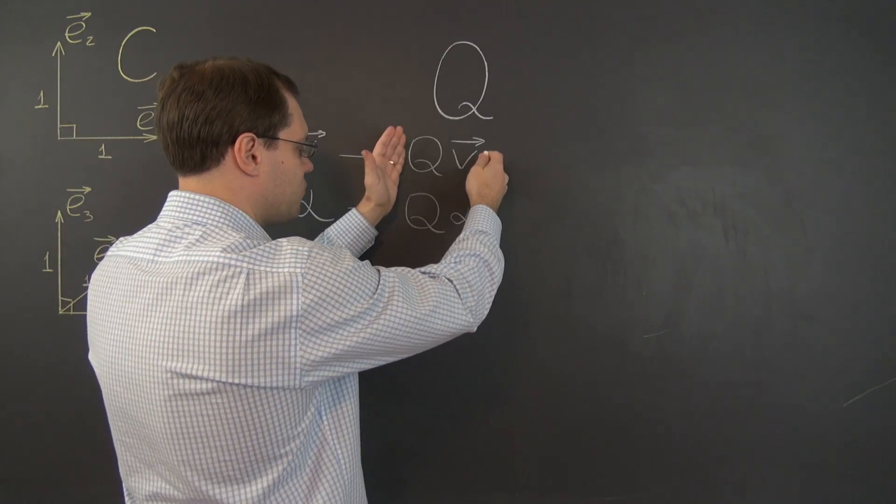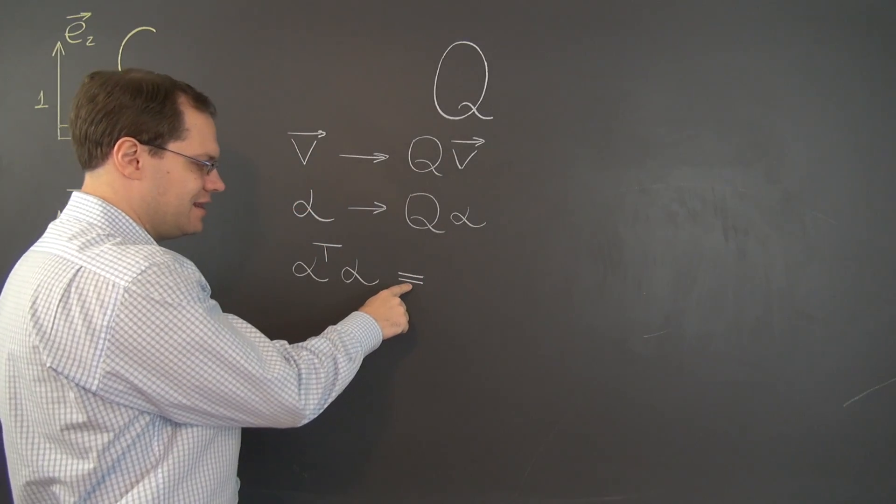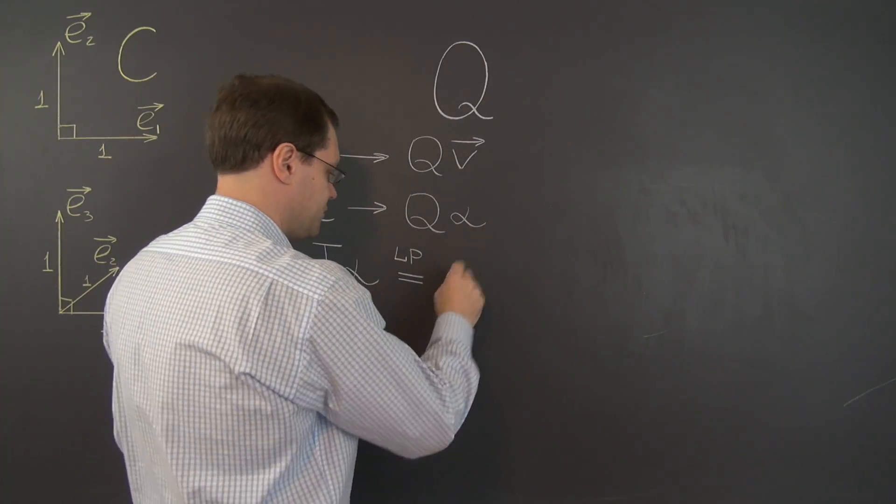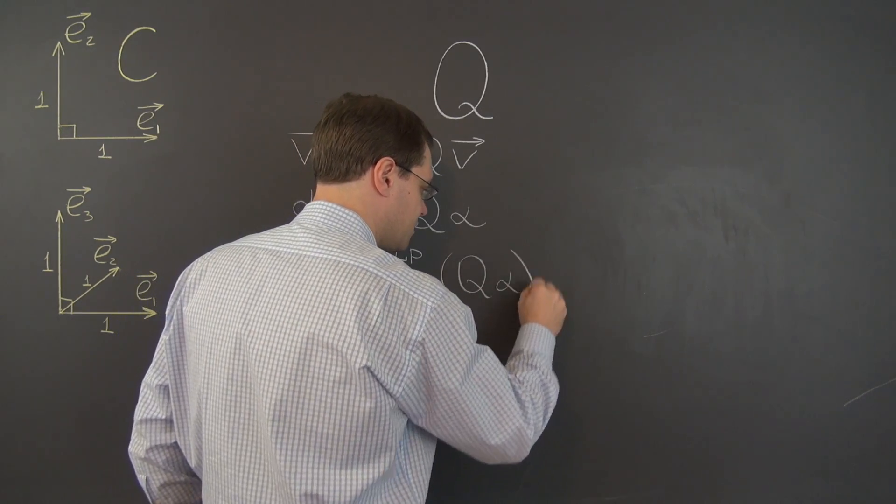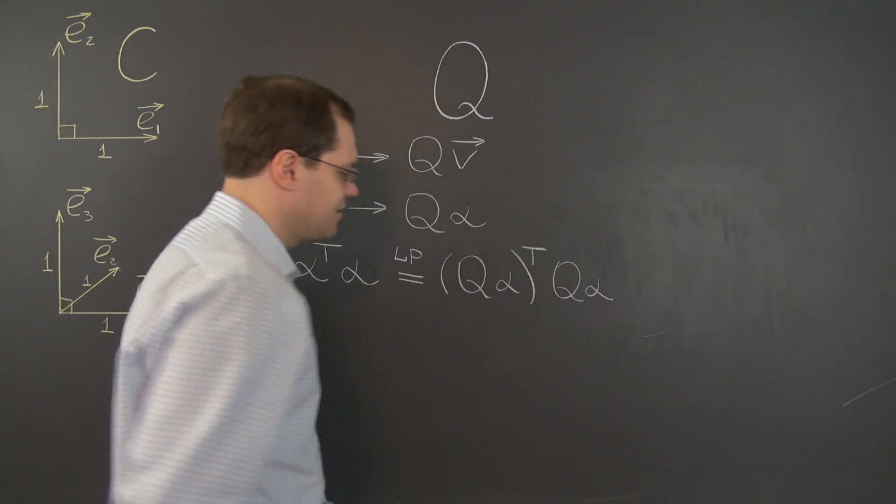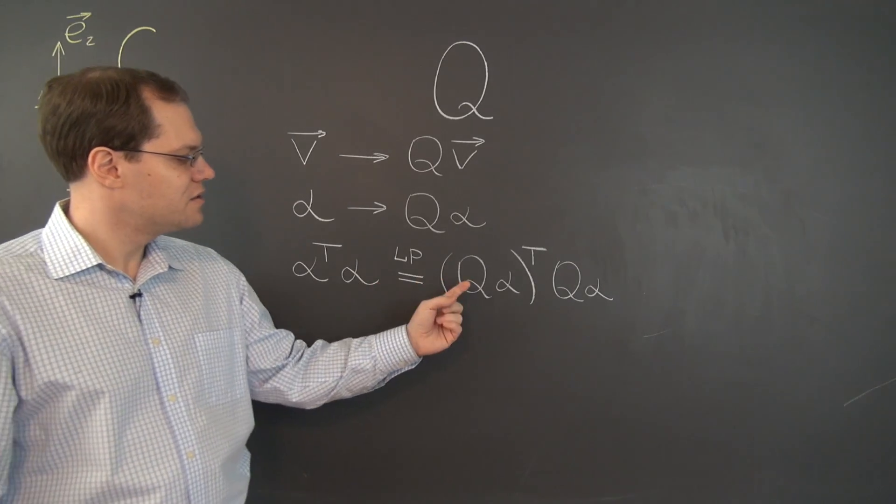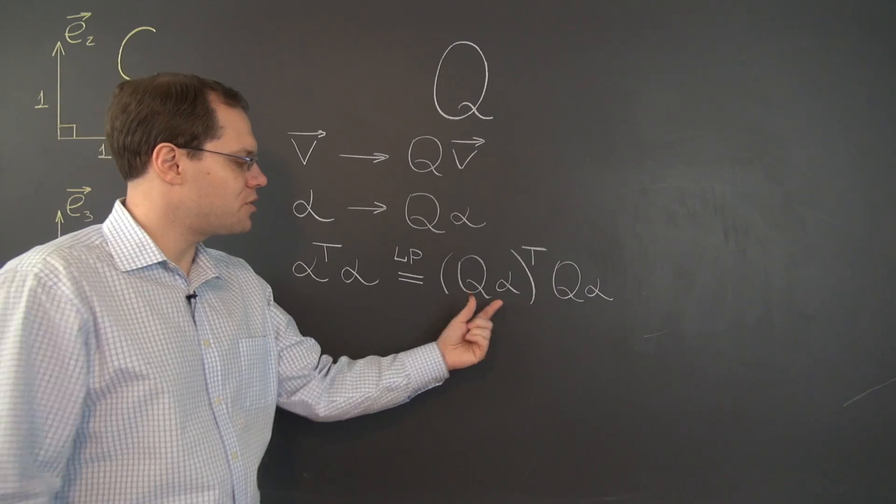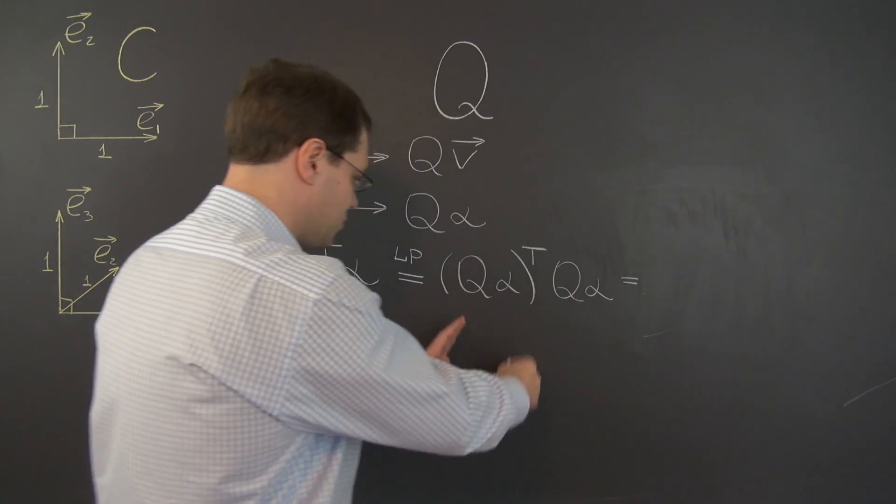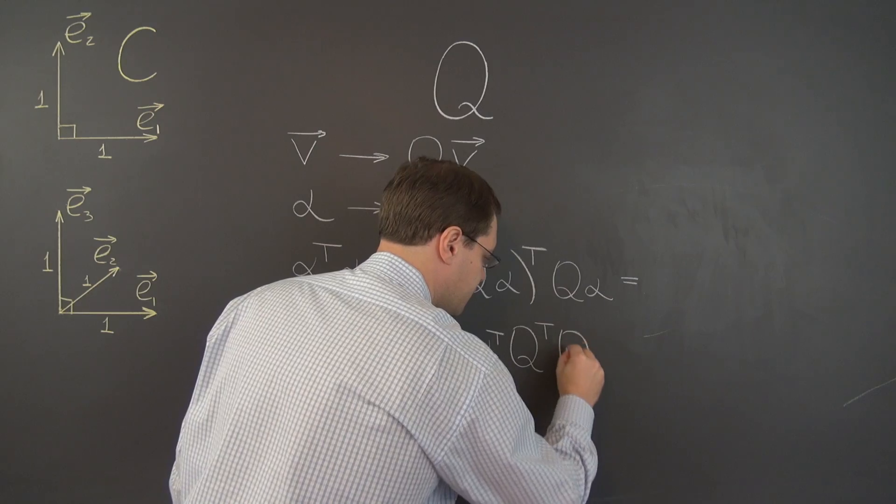And the length of this vector, which is represented by this vector in the component space, is of course, and I'm writing equal sign—length preserving, so this is length preserving, that's why equal sign—same type of expression: Q alpha transpose times Q alpha. And you see how algebra is doing all the work, because we know exactly what the next step is. The transpose of a product is the product of the transposes in the opposite order.